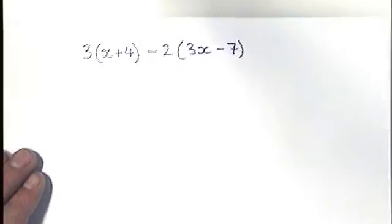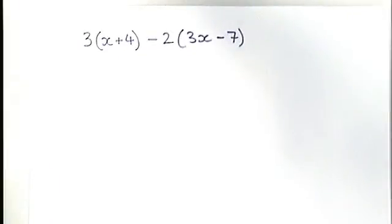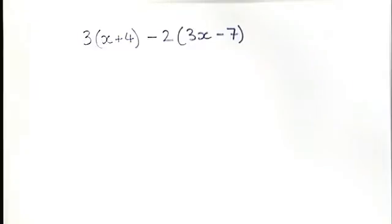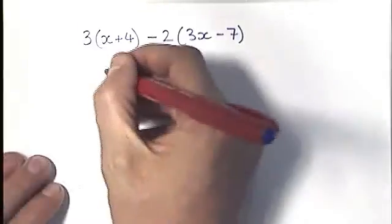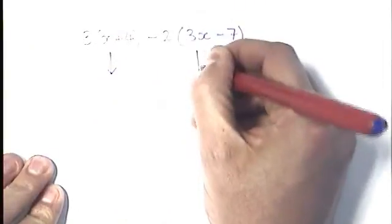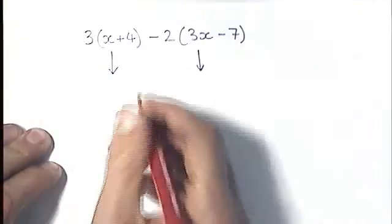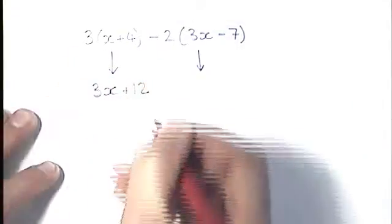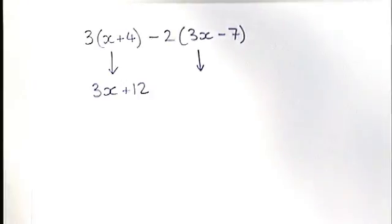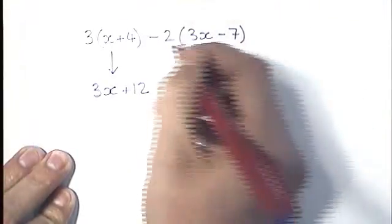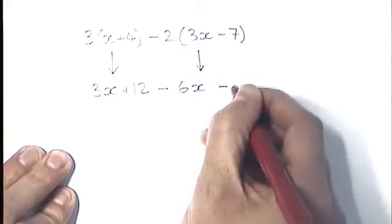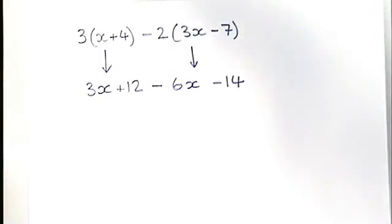The second place where people make mistakes with negative numbers in algebra is in questions like this one. They're asked to simplify an expression or they need to simplify it in the course of an equation or something. And what we're looking for is to multiply out the brackets. So I normally use these little arrows here and I say, I know that 3 lots of x plus 4, I need to multiply both parts by 3. And in here I need to multiply all parts by 2, so I get 6x minus 14. Can you spot it? The error there?